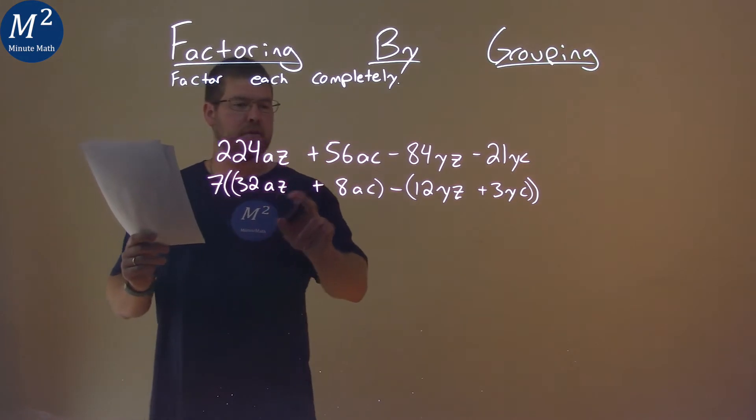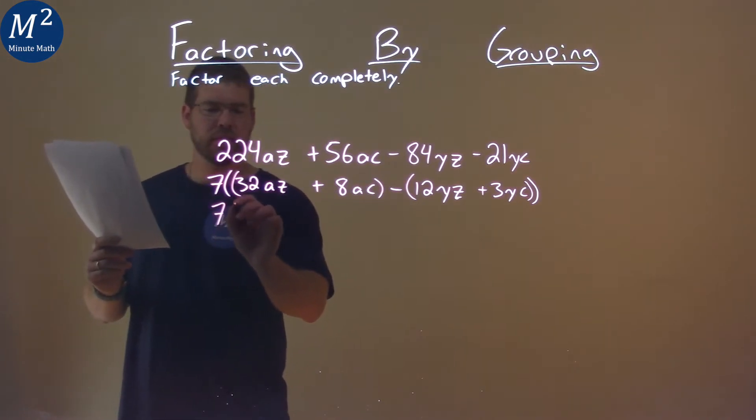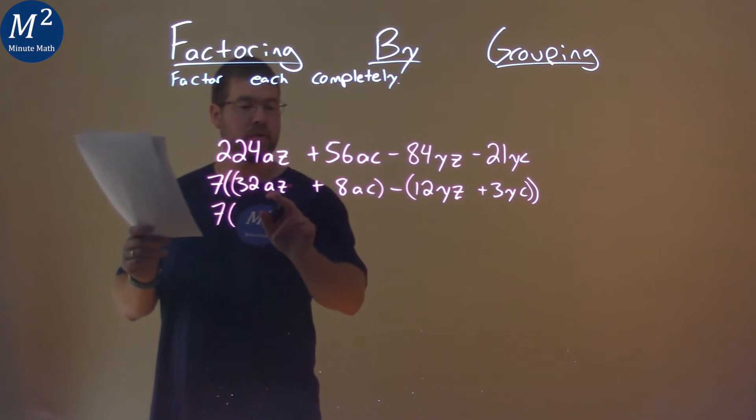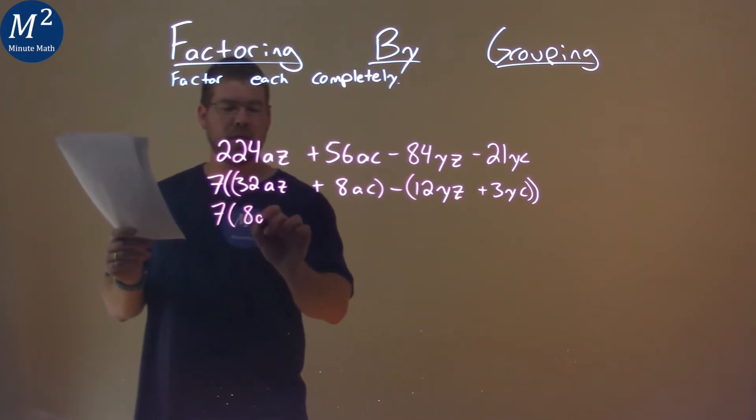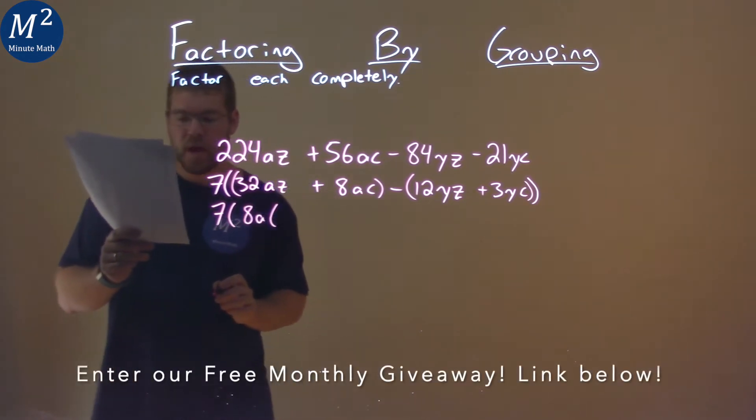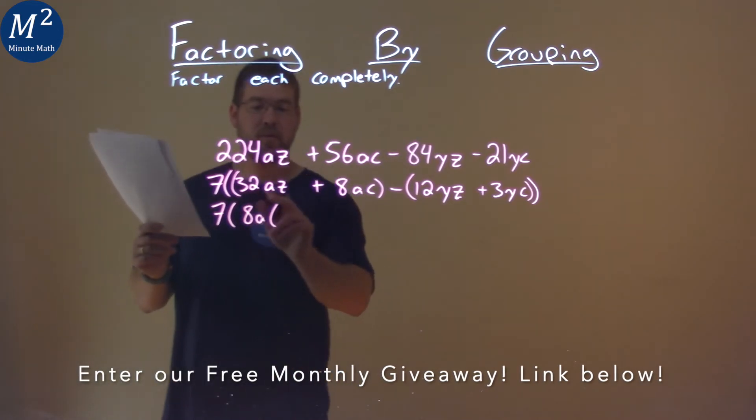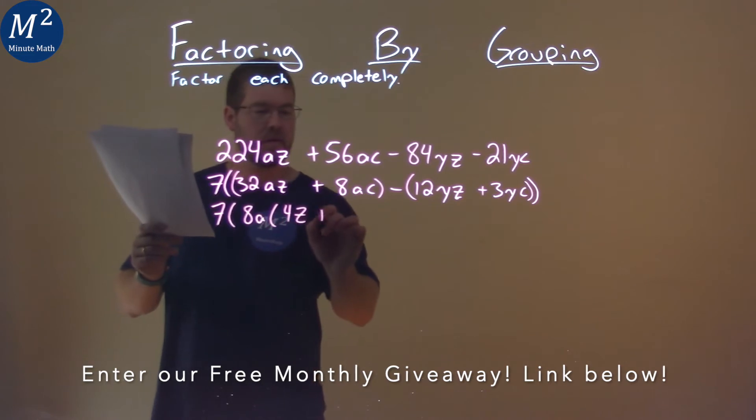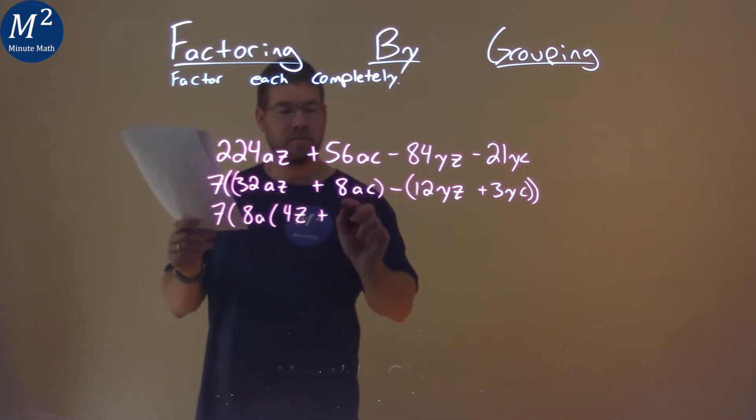We want to pull out a common factor here. So 7 comes down and what do we have? Well, an 8A is in both parts here. So if I pull out an 8A, what am I left with? If I pull out an 8A from 32AZ, I'm left with a 4Z. 8A out of 8AC is just a C.